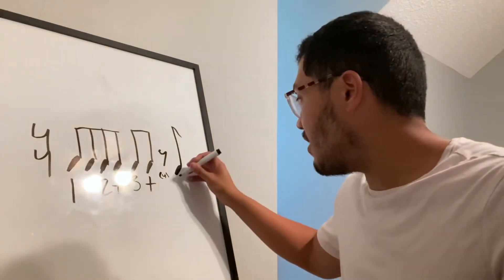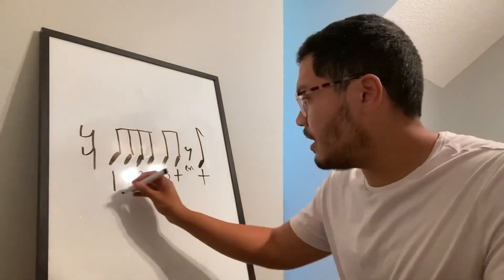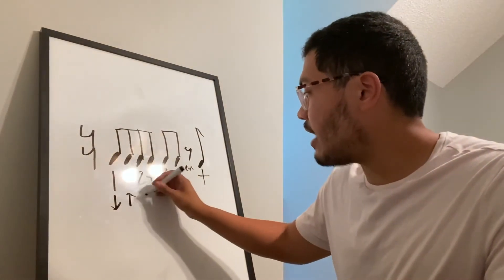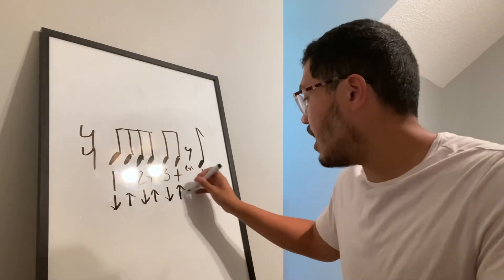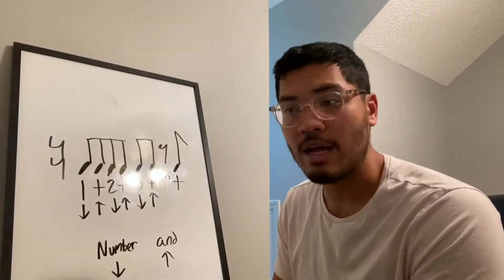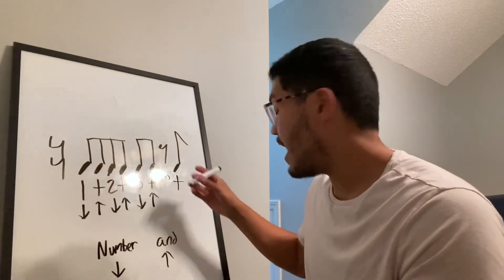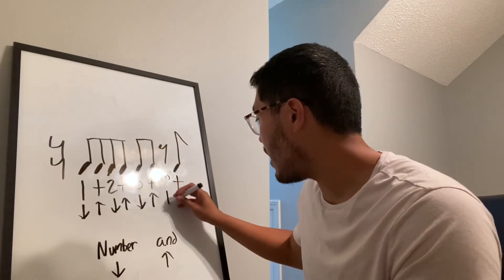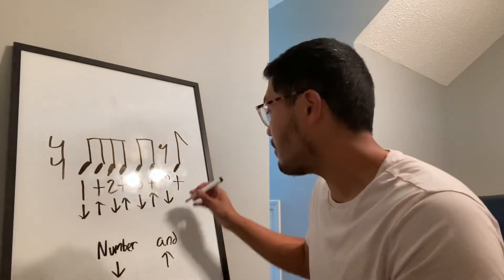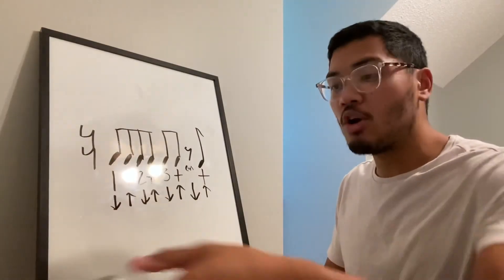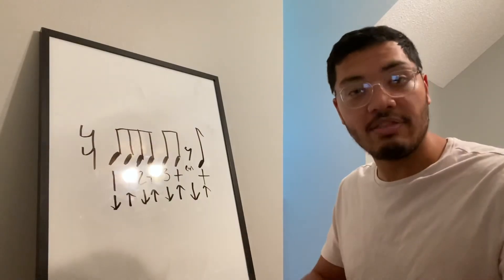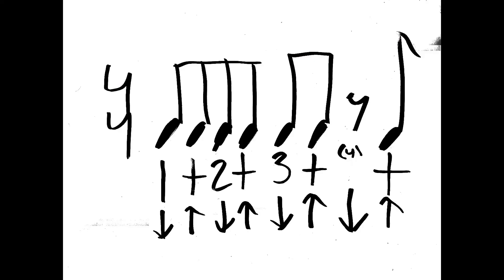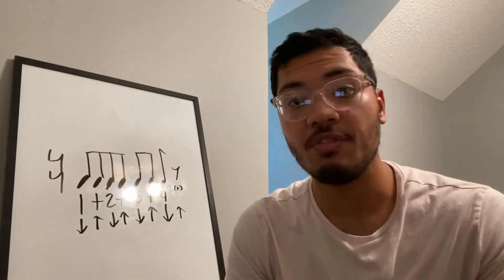And what am I going to put for the eighth note? A big and. Now let's look at where my feet should be: down on one, up on and — one and two and. When I get to three, foot is down; the and is up. Now we get to beat four — we have our eighth rest. That doesn't change anything; it's still a number, so my foot still goes down on beat four. Then we have our eighth note and my foot goes up. Let's count it out loud: one and two and three and — and. One more time: one and two and three and — and.